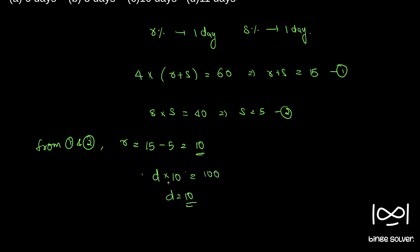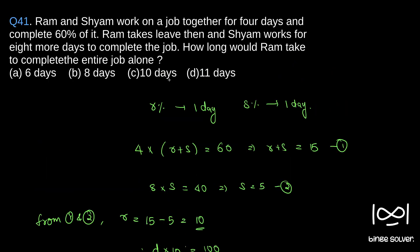If Ram takes d days to complete the entire work — that is 100 percentage of work — and Ram completes 10 percentage of work in one day, then 10 days will be taken to complete the entire work. Solution to question 41 is C, 10 days.